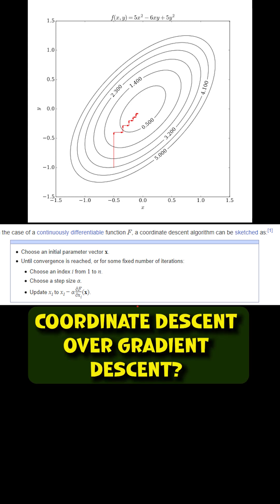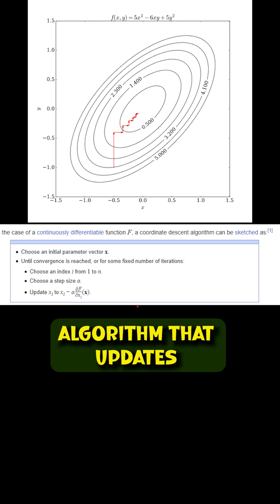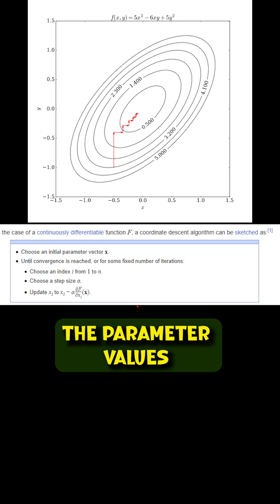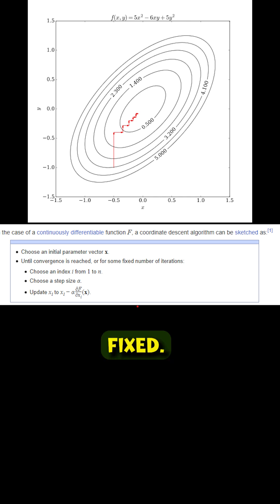In what situation would you prefer coordinate descent over gradient descent? Coordinate descent is a simple optimization algorithm that updates parameter values by optimizing one coordinate at a time while keeping the other coordinates fixed.